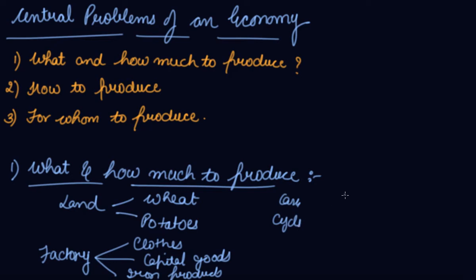And if, let's say, there is a war condition, you should produce defense goods such as guns. You should allocate your resources, your funds, to the defense goods if there is a situation of war rather than in the production of other such goods. So this is the first problem of an economy, what and how much to produce.